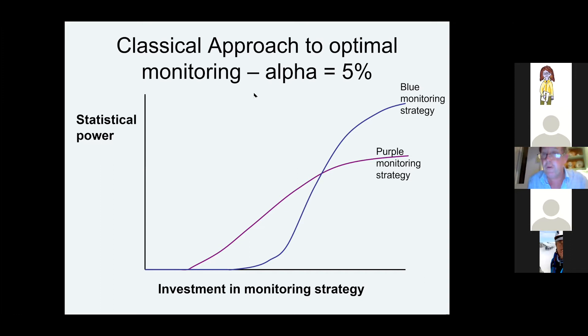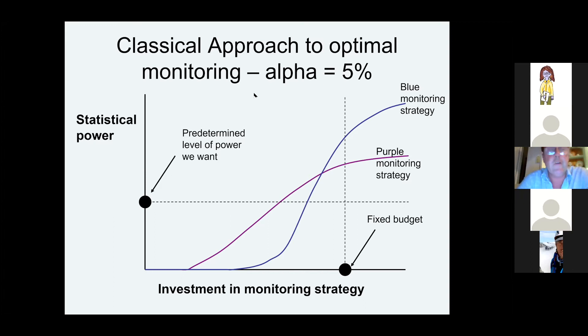Given that information and a fixed budget, you could look at two different monitoring strategies — one might be a survey of fishermen, one might be satellite or catch data — and choose accordingly. You can also use these money-versus-power curves to get a predetermined level of statistical power: for example, being 80% sure that you'll reject a false null hypothesis for the cheapest amount of money. So that's good, that's well known, and that's great — but it suffers from a few problems.